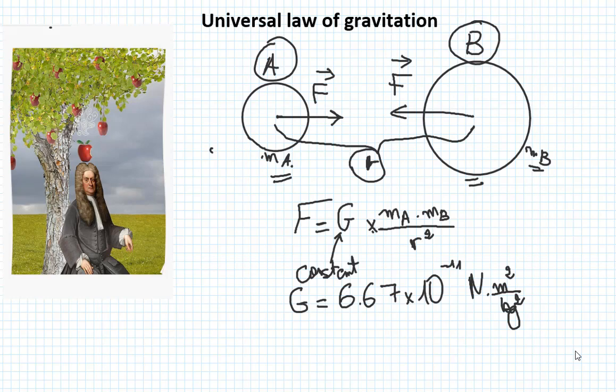So why we call it universal? Because we can use this formula to calculate force of gravity anywhere in the universe, even between two planets, for example, our sun and the moon, or our sun and our earth. That's why we call it universal.